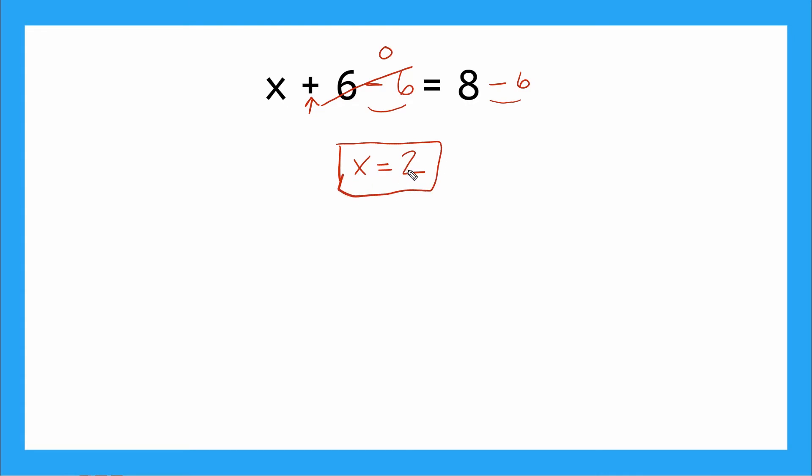But I can test my answer by using substitution. So I started with x plus 6 is equal to 8. And if I use substitution, I'm just going to plug in 2 wherever I see an x. So I will have 2 plus 6 equals 8. And 2 plus 6 is 8. And 8 does equal 8. So that checks out. X equals 2 is our answer.